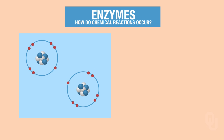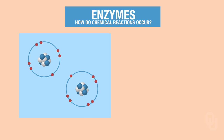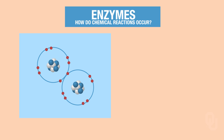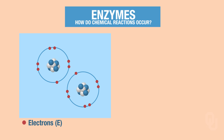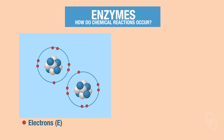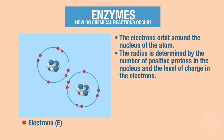How do reactions occur? Let's go ahead and look at this image here. In this image, you have two atoms, and these two different atoms will eventually have to collide. You also have electrons in red — I'll just put an E there for the electrons — and they're orbiting around the nucleus. The nucleus is in the center of the atom. The electrons orbit around the nucleus of an atom whose radius is determined by the number of positive protons in the nucleus and the energy level of the electrons.